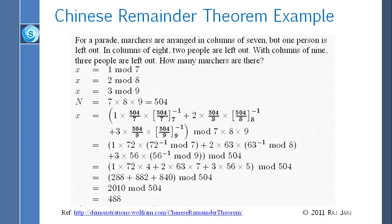It's the same formula as before, but you need to find a. You are given a mod mi for all the moduli and you can calculate. N in this case is 7 times 8 times 9 equals 504. You compute 1 times (504/7) times the inverse of 72 mod 7, plus 2 times (504/8) times the inverse of 63 mod 8, plus 3 times (504/9) times the inverse of 56 mod 9. If you calculate those inverses, you get 4, 7, and 5. Once you know that, you multiply them together and get 2010 mod 504, giving 488.